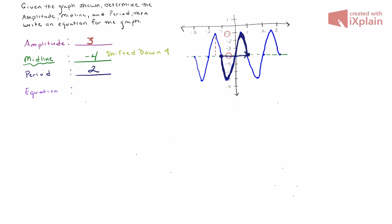From here we have all the pieces we need. In order to create the equation, we need to determine our horizontal stretch or compression, which we can find by doing 2π over our period, which we call p. In this case, we would have 2π divided by 2, which simplifies to π.